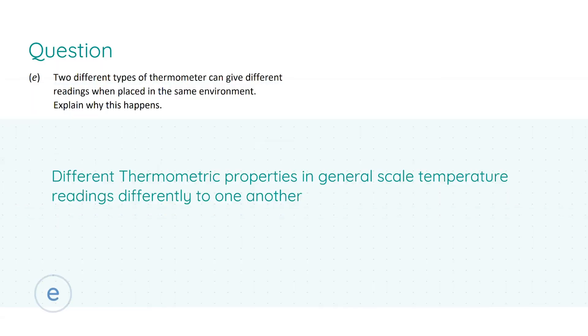Part e: we are told that two different types of thermometer can give different readings when placed in the same environment and we're asked to explain why this happens. Your answer for the full seven marks is: different thermometric properties in general scale temperature readings differently to one another.